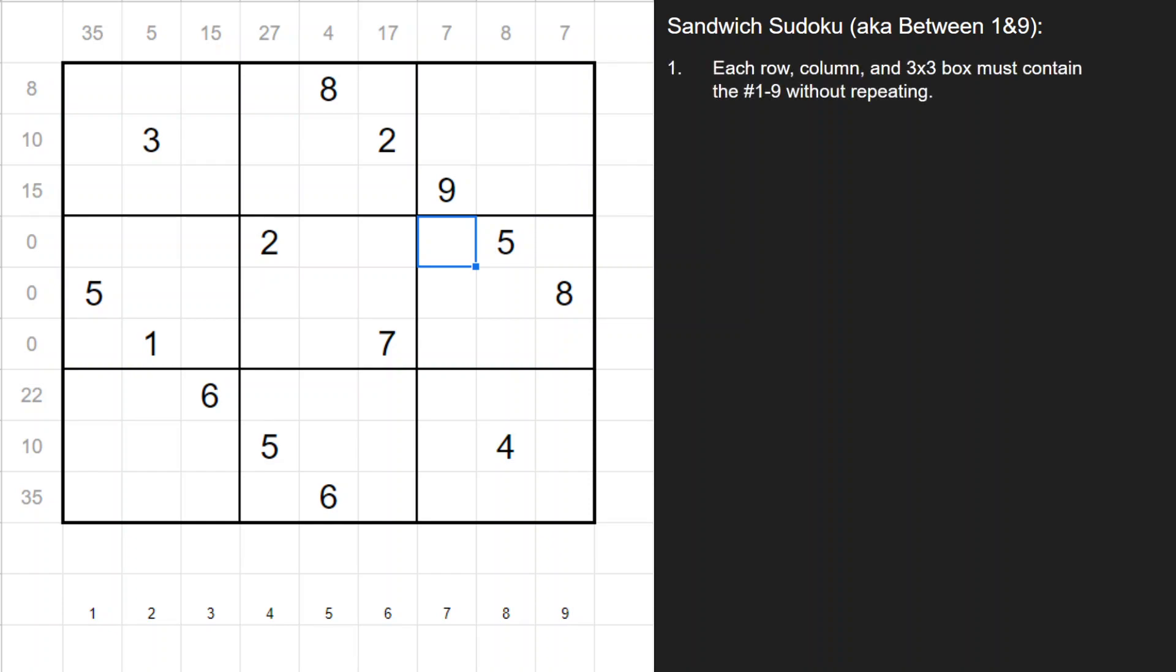The puzzle has the same rules as regular sudoku in that each row, column, and 3x3 box must contain the digits 1 through 9 without repeating. However, there are some added clues with numbers along the outside, and these are the sum totals of the digits in between the 1s and 9s of the respective row or column.